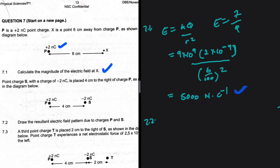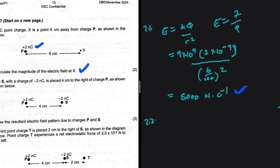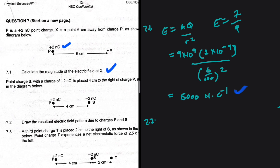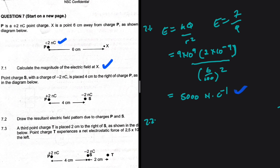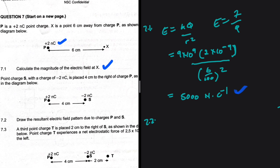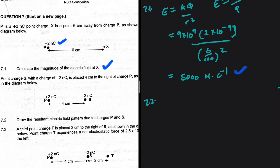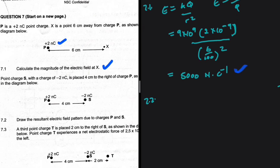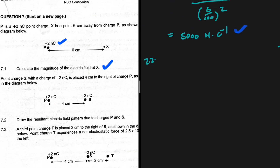Now 7.2: point S with a charge of minus 2 nanocoulombs is placed 4 centimeters to the right of charge P as shown in the diagram. We need to draw the resultant electric field pattern due to charges P and S. P is positive and S is negative, so they will attract.